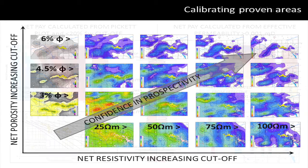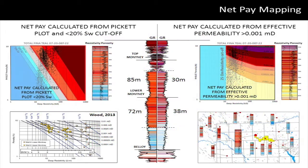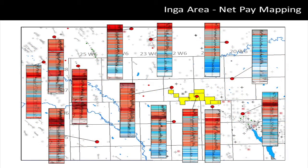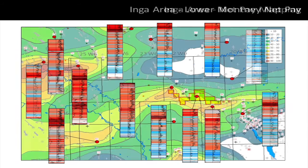We can go on to use our cross plot analysis in petrophysical modeling. Here we have two interpretations of net pay for the same well: on the left, net pay calculated from a Pickett plot, and on the right, net pay calculated from calibrated effective permeability curves. We can see how our understanding of net pay varies depending on what method we use. Let's come to mapping — I'm going to focus on the Inga area of northeast British Columbia to see how all of this zone attribute and cross plot analysis work can come together to help us quantify our resource potential.